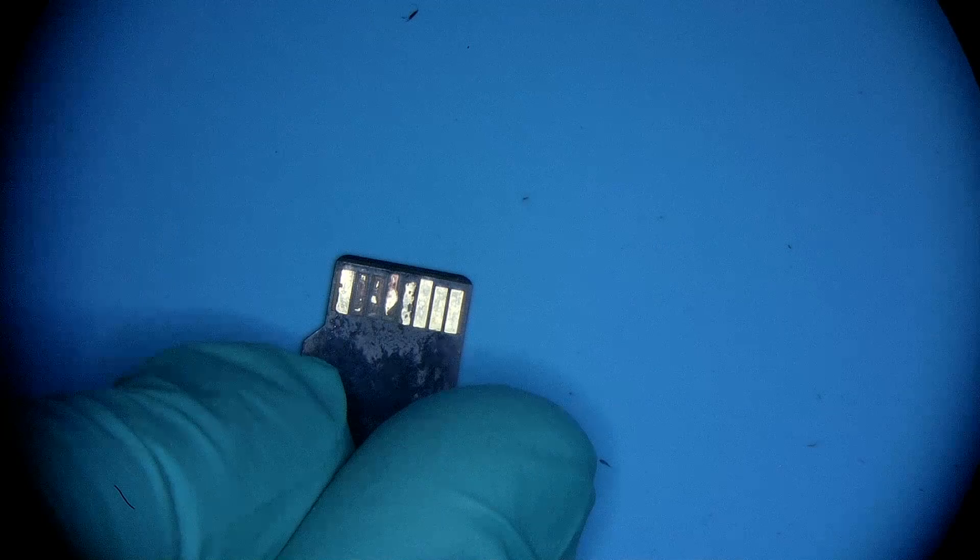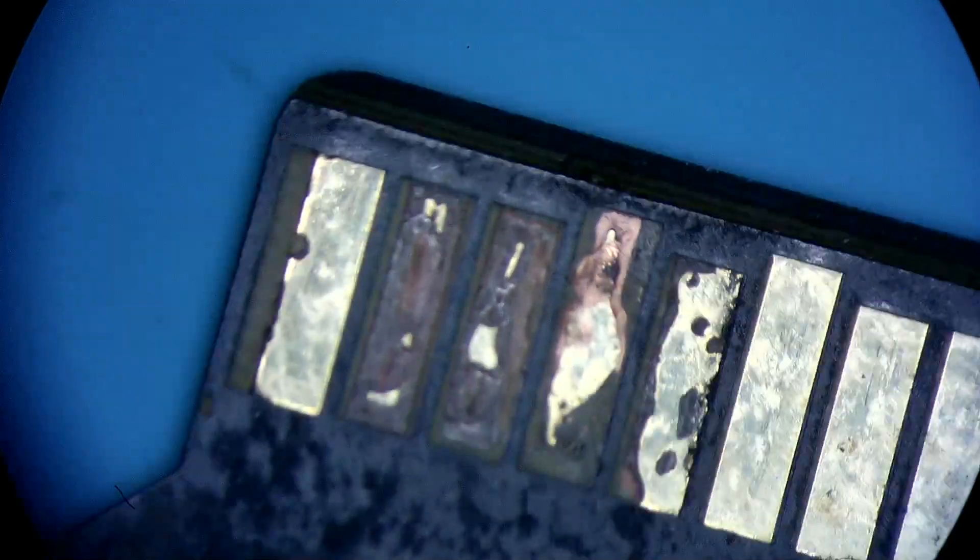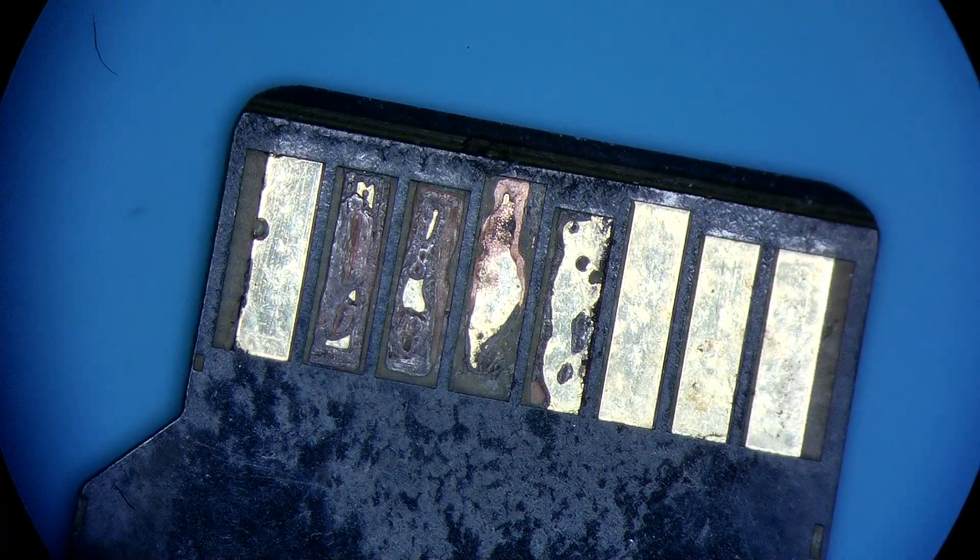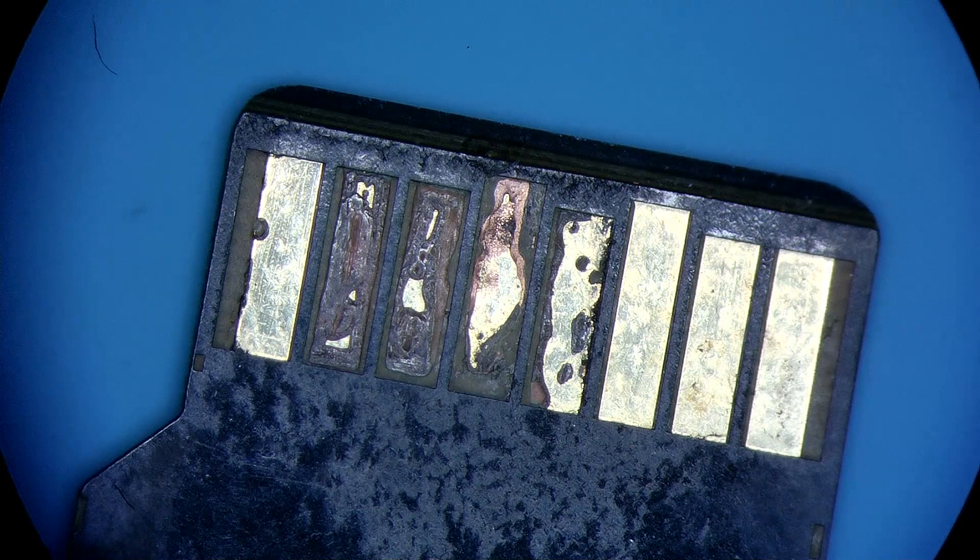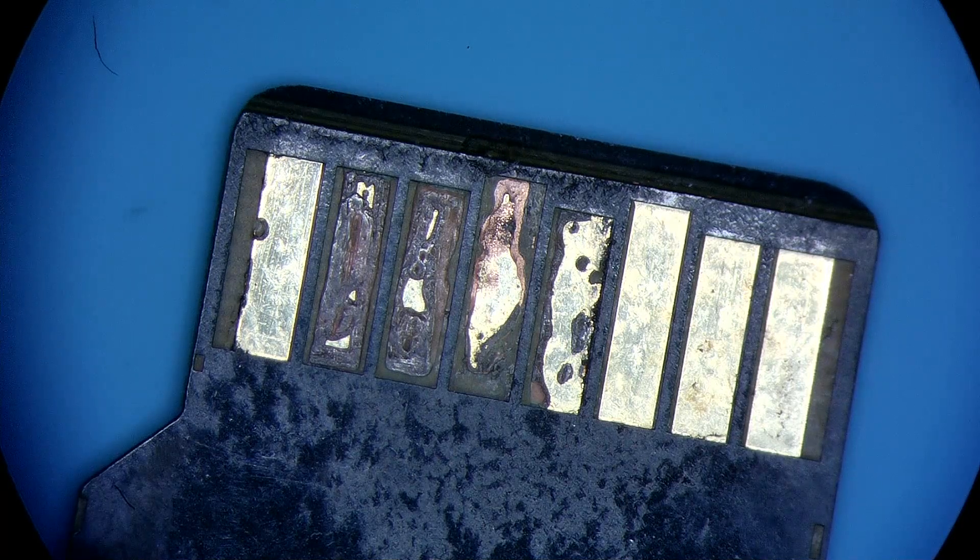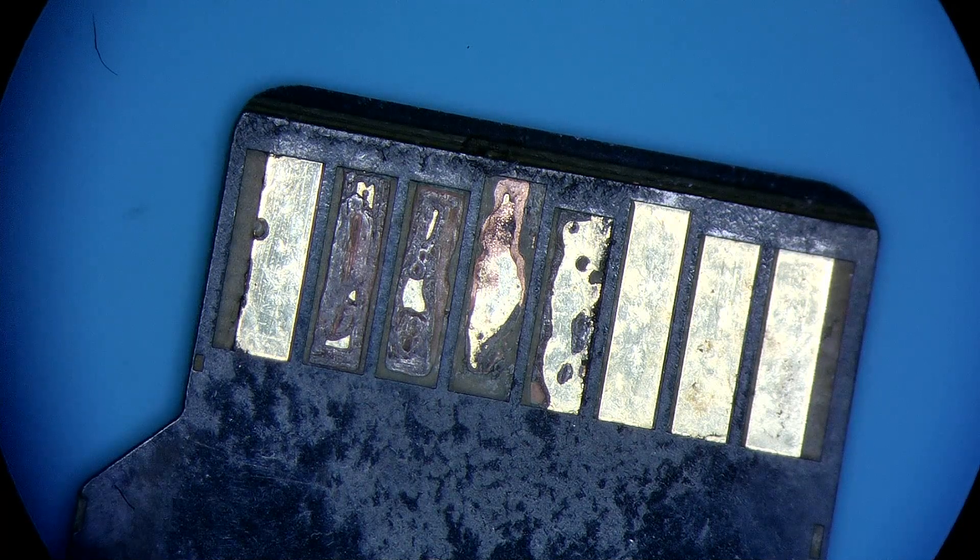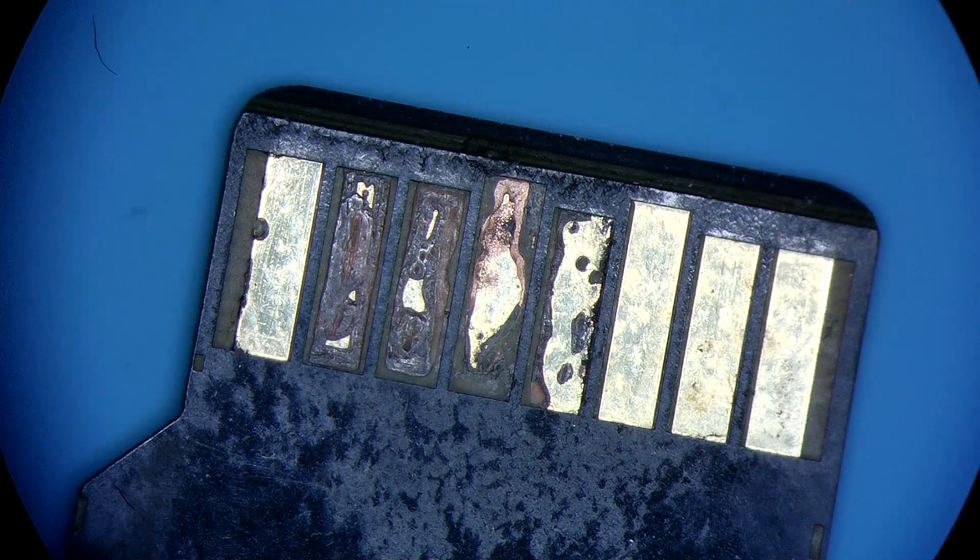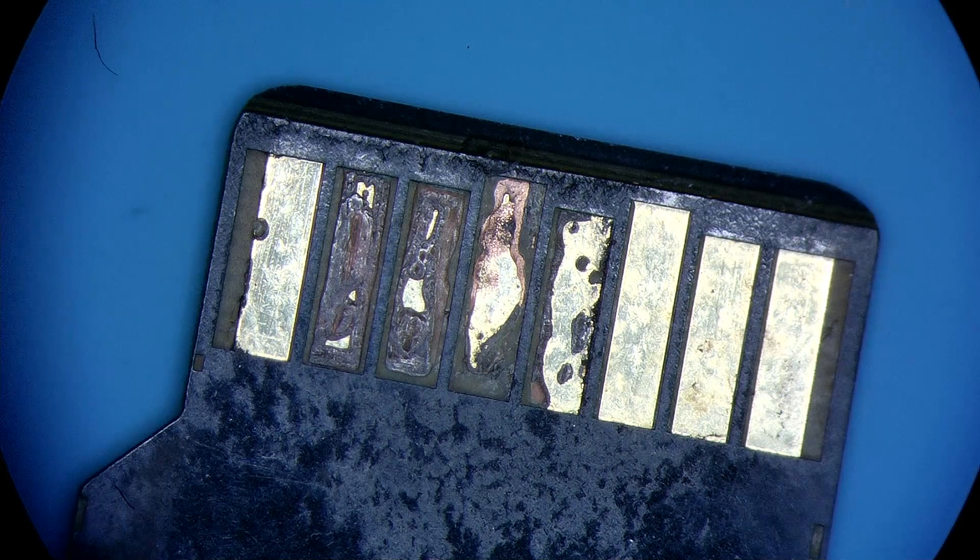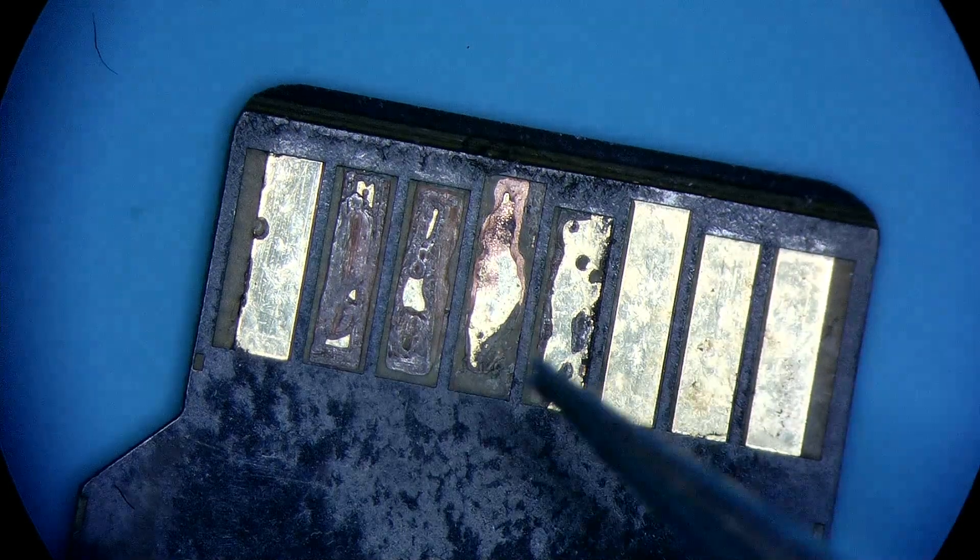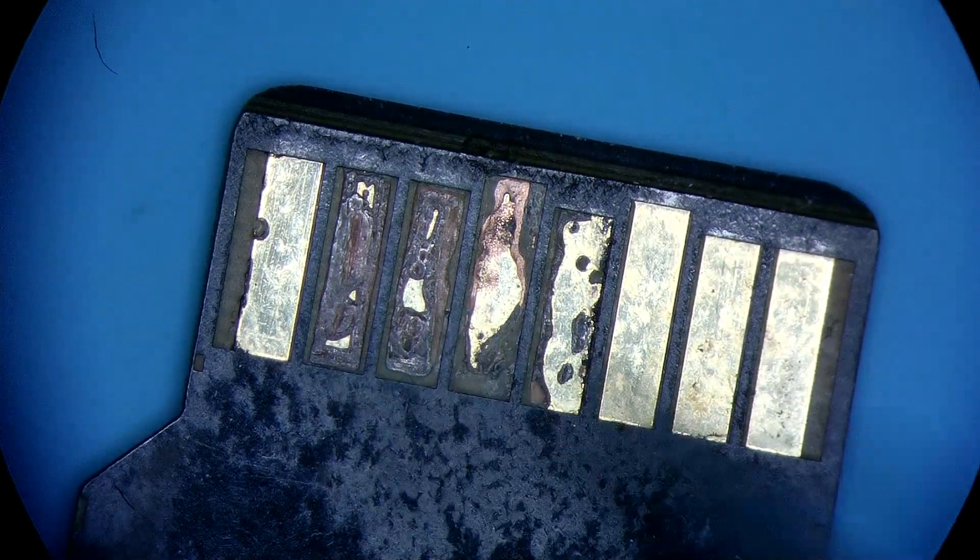This card got hit with massive corrosion and usually that would be the result of a GoPro or something like one of those action camera cards leaking while they're in the ocean, or something with salt water in it. That salt water makes its way onto these gold plated pads.